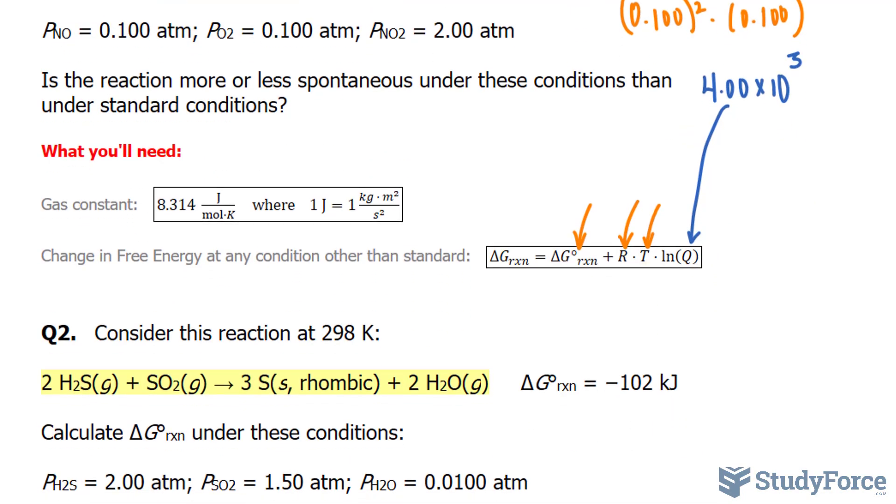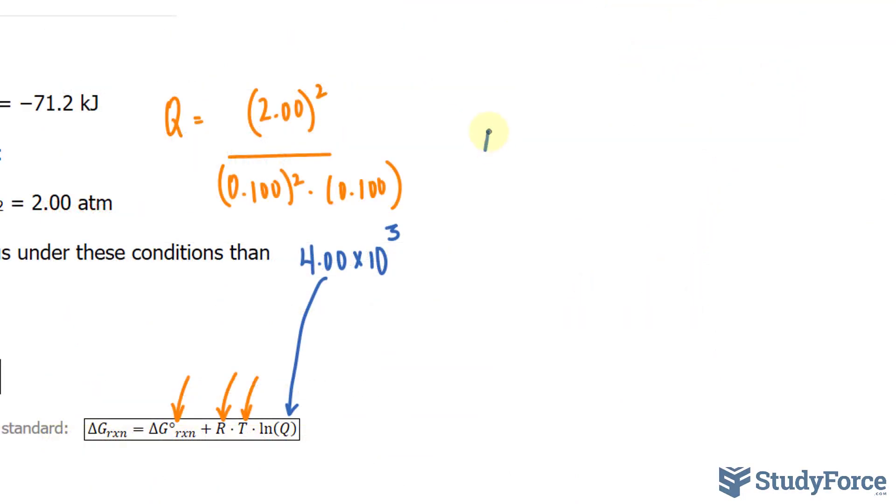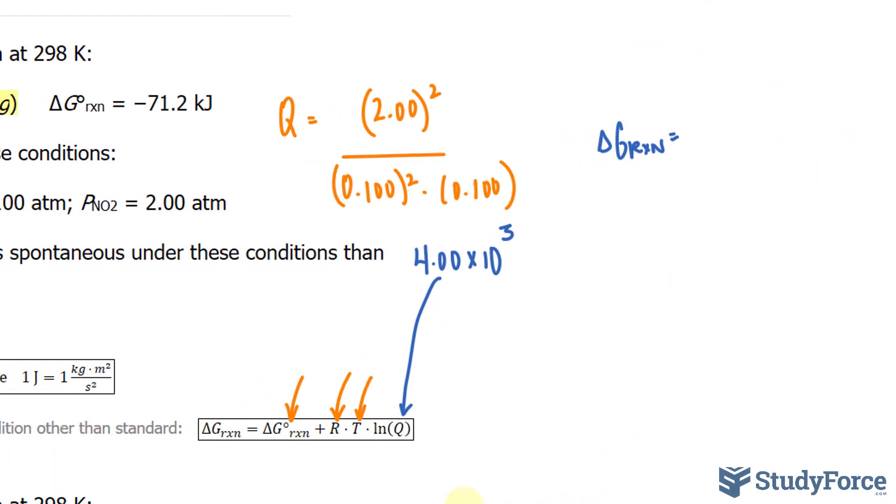Now we can go ahead and calculate the rest. I'll make some more room. Rewriting this equation, delta G for the reaction is equal to negative 71.2, that's in kilojoules.